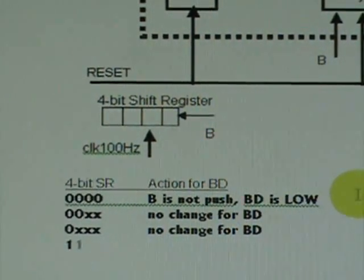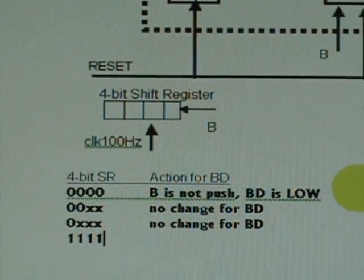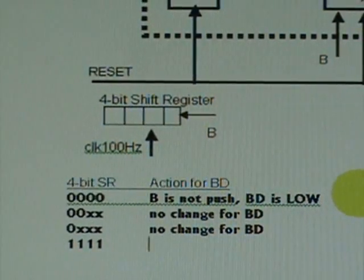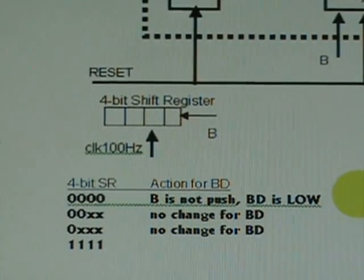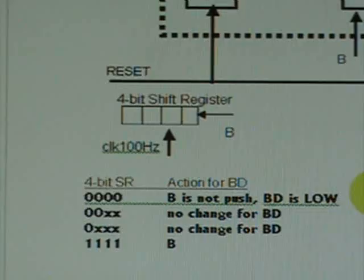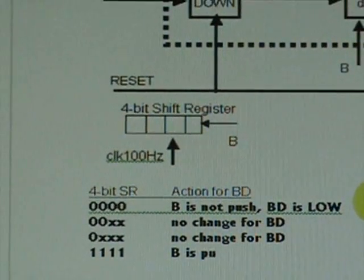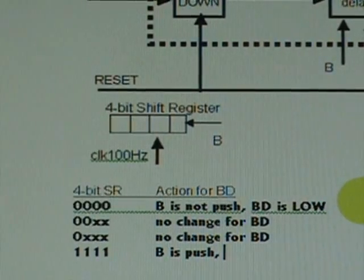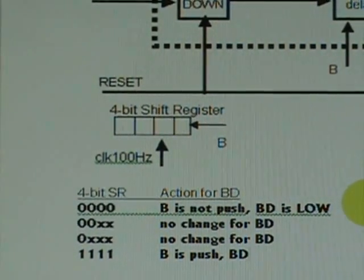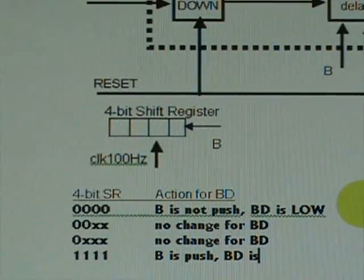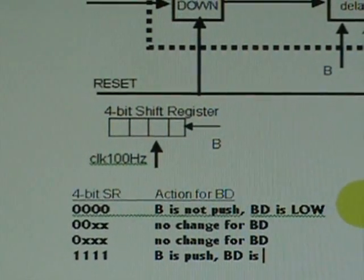But at the end of four consecutive clocking of the register, if the four-bit register is filled with one, then it is safe to assume after 40 milliseconds that we have a clean depression.